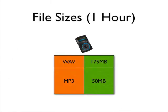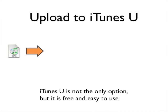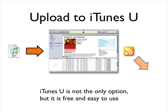The Sansa Clip records in WAV format — large, high-fidelity files, typically around 175 megabytes for a one-hour recording. When Audacity compresses it to an MP3, it comes down to around 50 megabytes — not too large, something you can distribute to students. For distribution, I use iTunes U, which Apple provides free of charge to educational institutions. It's not the only option, but it's free and easy to use.